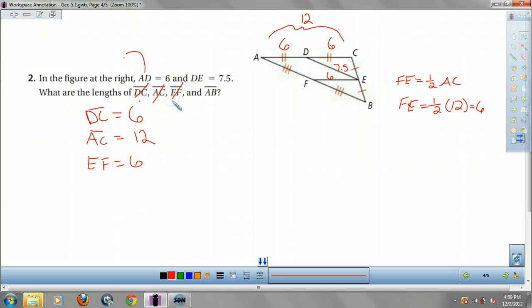And what about AB? Okay. AB is going to be equal to 2 times whatever DE is, right? Well, DE is 7.5. So AB is going to be 15. Okay?